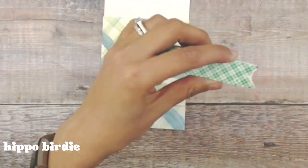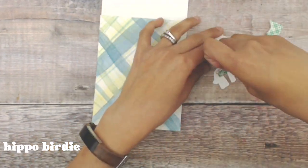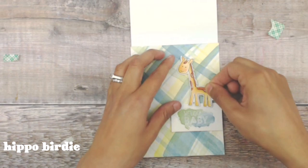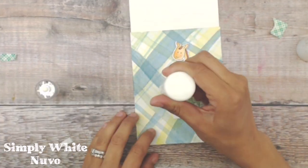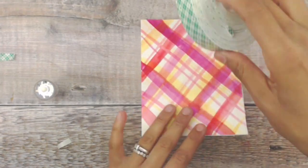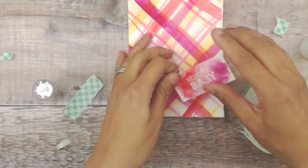Using foam adhesive onto the back of that sentiment and then I have pre-cut and pre-colored some of the cute giraffes from the Hippo Birdie placing that with foam tape and then adding simply white Nouveau drops.